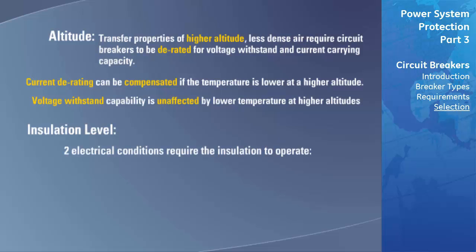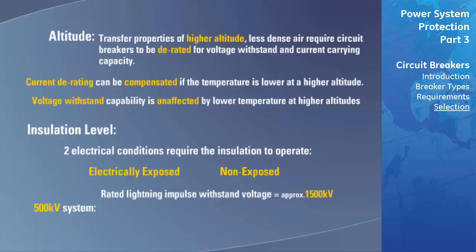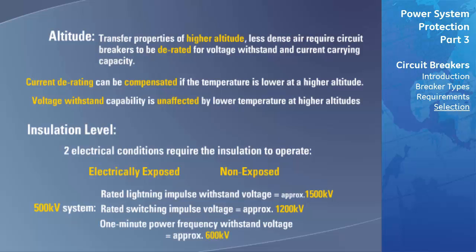There are two separate electrical conditions under which insulation may be required to operate: electrically exposed and non-exposed — essentially whether the insulation is mounted indoors or outdoors. Outdoor switchgear is exposed to atmospheric conditions such as lightning, which can cause overvoltages. For a 500 kilovolt system, the rated lightning impulse withstand voltage is approximately 1500 kilovolts, the rated switching impulse voltage is approximately 1200 kilovolts, and the one-minute power frequency withstand voltage is approximately 600 kilovolts.